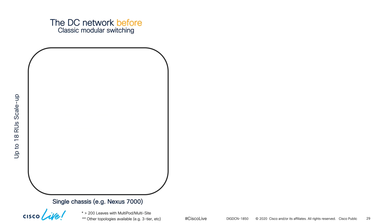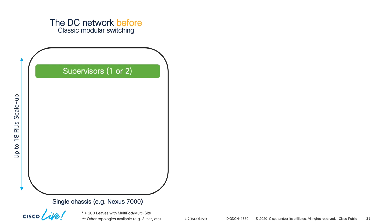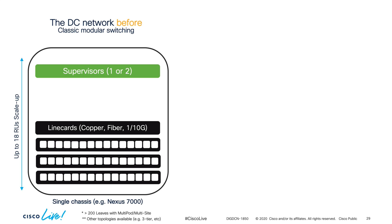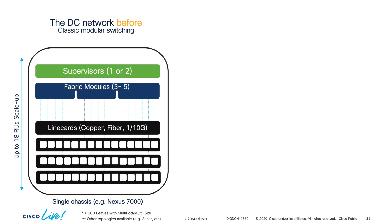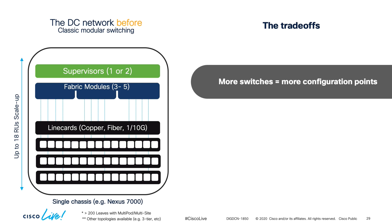Let's put a modular Nexus 7000 switch as an example for the legacy model. Before ACI, we would purchase scale-up architectures with single or dual supervisors as the management point. We would normally buy two for high availability, then buy one or multiple line cards with different speeds and media types based on port density. For the Nexus 7000, we would also buy fabric modules that served as the backplane or crossbar to communicate line cards and supervisors. Once we ran out of ports, we would buy another switch with a totally independent management plane.